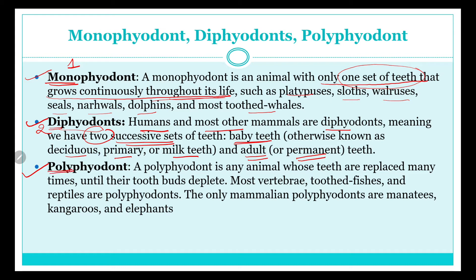'Poly' means many, so a polyphyodont is any animal whose teeth are replaced many times until the tooth bud is completely depleted. In monophyodont teeth come once, in diphyodont twice, and in polyphyodont many times. Most vertebrates — bony fishes and reptiles — are polyphyodonts. The only mammalian polyphyodonts are manatees, kangaroos, and elephants.